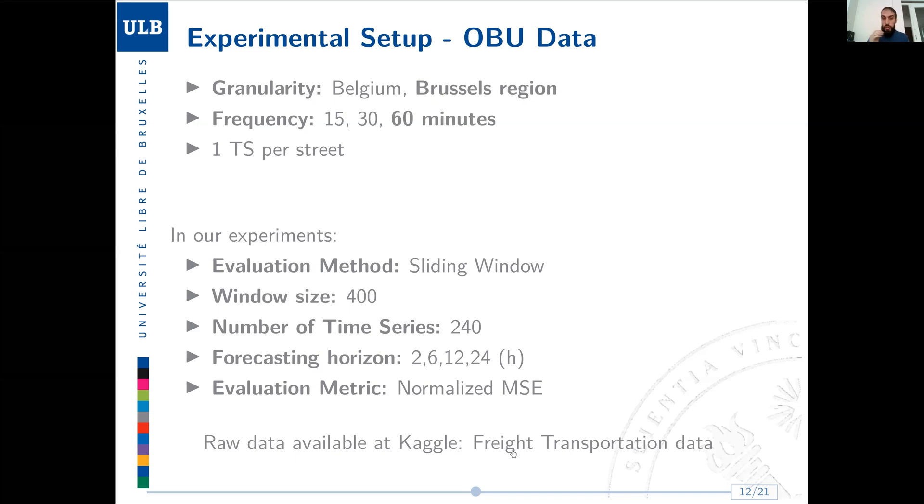I will focus here mostly on the data I used, which has different temporal granularities: 15, 30, and 60 minutes, and for spatial granularity, that can come from the whole Belgium or only the Brussels region. As I said before, the data from the truck is transformed in a way to have one time series per street. I'm going to focus on only the Brussels region with data with a 60 minute frequency, using a sliding window of size 400 time steps, so 400 hours, 240 time series, 240 streets at a time, and try to forecast at 2, 6, 12, and 24 hours. If you're interested in the data, we made it available on Kaggle under the freight transportation data. And when I publish the presentation, you will have some clickable links to get to those additional materials.